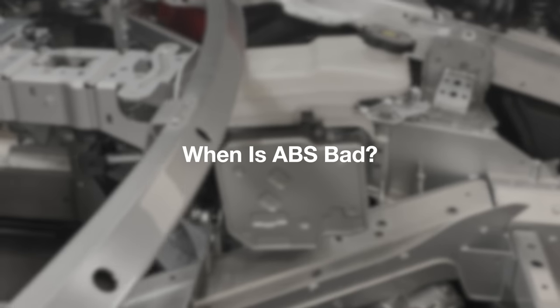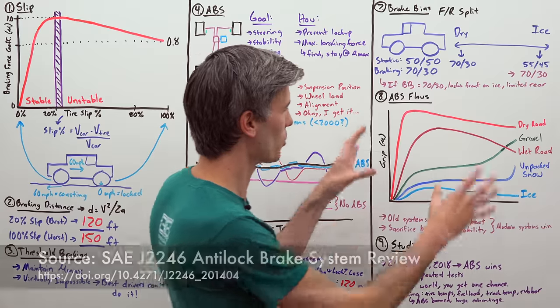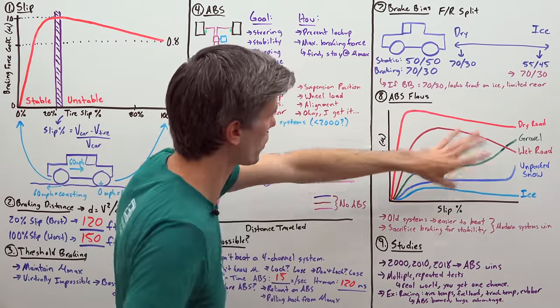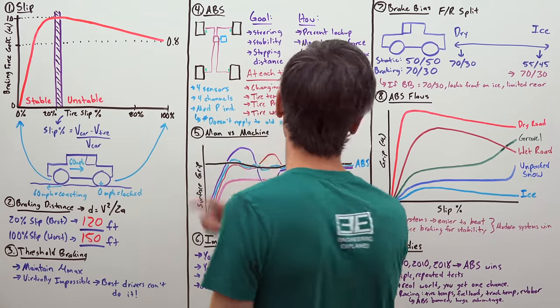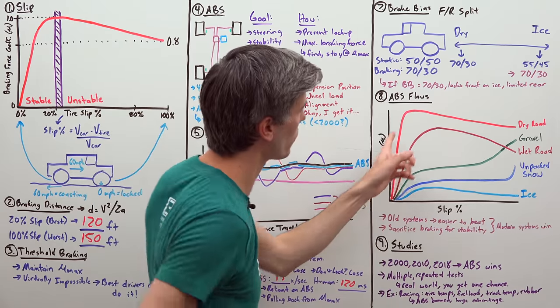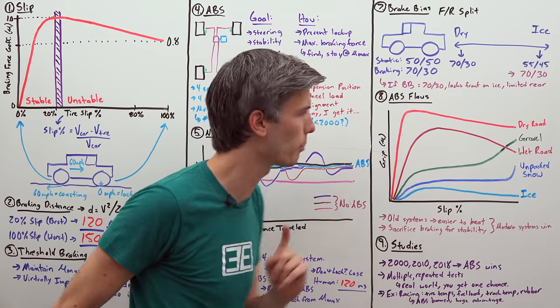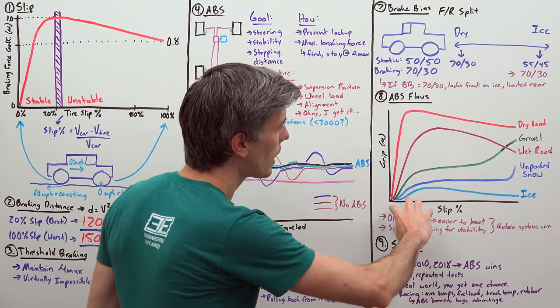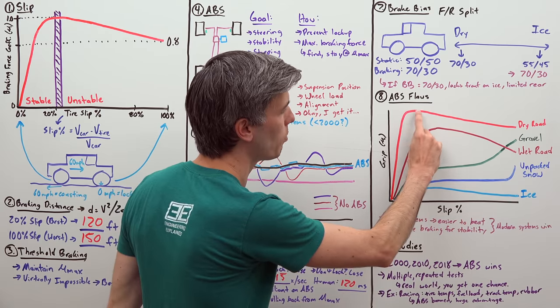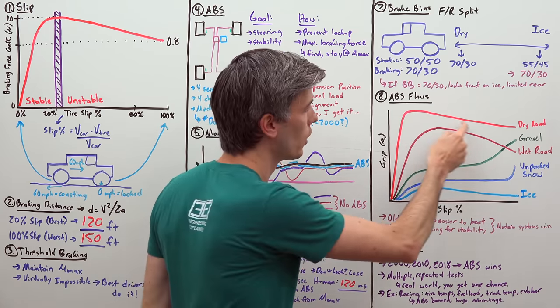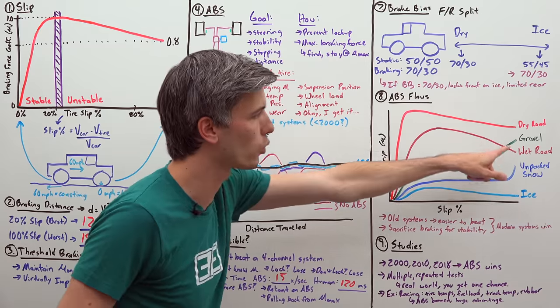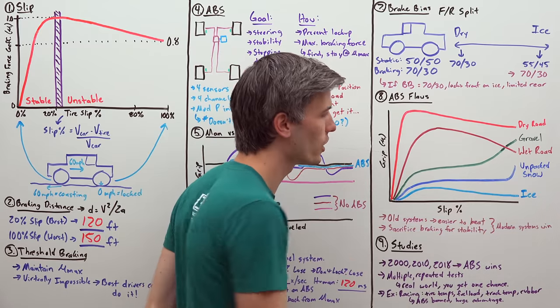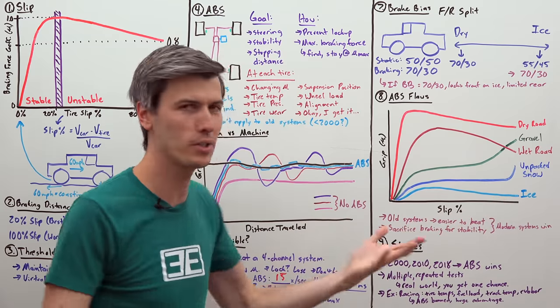Now, does ABS have flaws? Yes, it absolutely does. So let's take a look at some different scenarios. We're looking at the same graph for just different conditions. Here in red, we have a dry road. Same over here. We've got a dry road here in red, our slip percentage versus our grip percentage. Now, you'll notice that a dry road and a wet road and ice all have this similar shape where you reach a peak and then as that tire starts to slide, you lose grip. However, for gravel and for unpacked snow, you can see the maximum amount of grip is actually achieved when that tire is fully locked up.